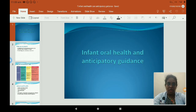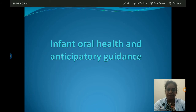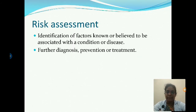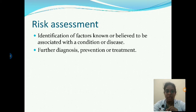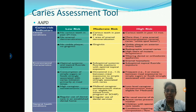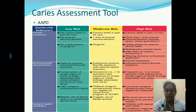Good morning students. Today our topic is about infant oral health and anticipatory guidance. The identification of factors known or believed to be associated with a disease condition is known as risk assessment. It can be assessed by the Caries Assessment Tool given by the American Academy of Pediatric Dentistry, which indicates caries risk with three characteristics: clinical conditions, environmental characteristics, and general health conditions.